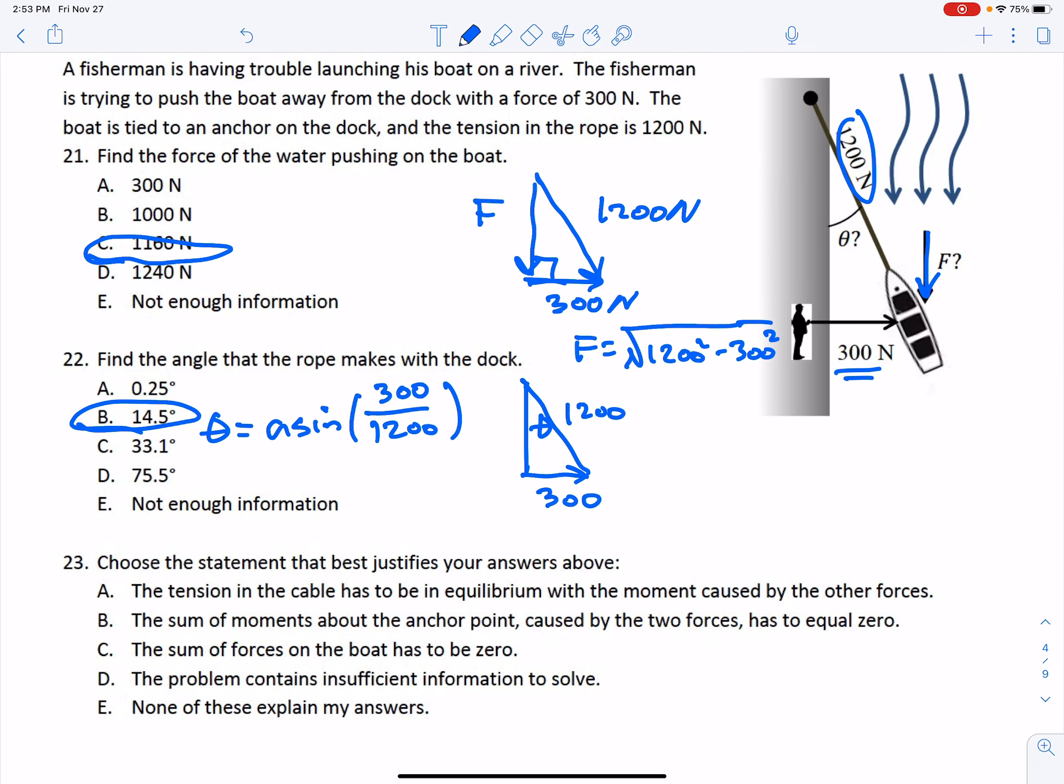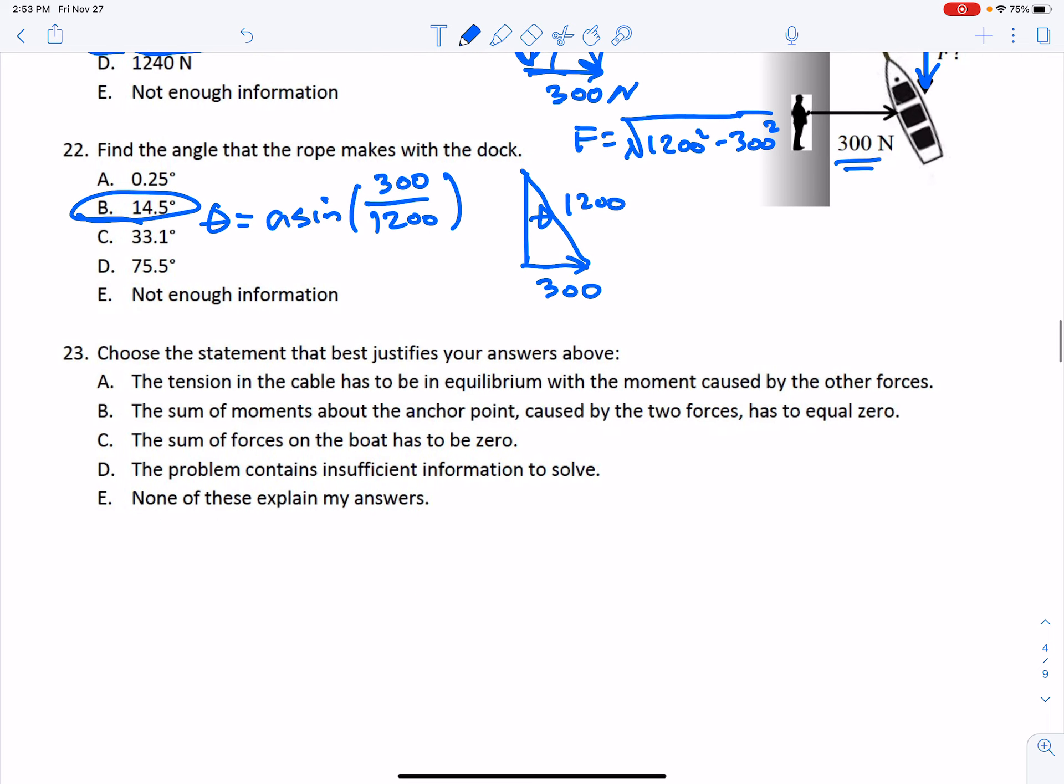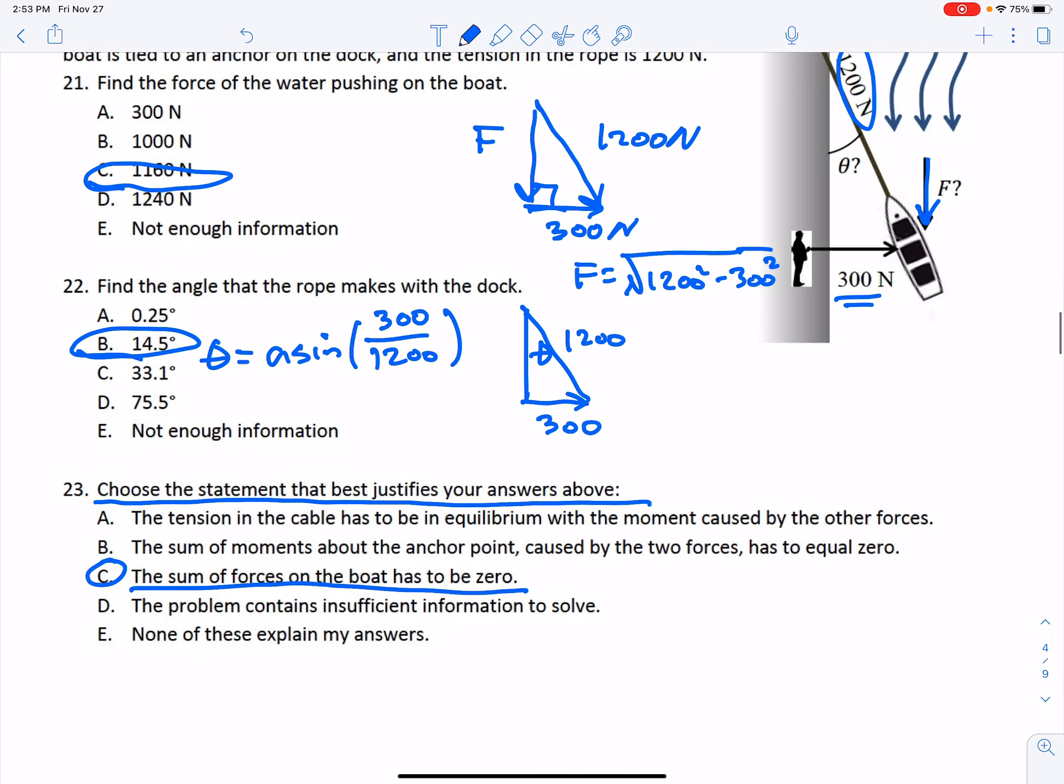So notice here we didn't calculate any moments, it's just sum of forces, it's a force triangle. If you're looking to choose the statement that best describes our answer, we're talking about only forces. Sum of forces on the boat has to be zero. That's the only thing that we needed to get to the answer on problems 21 through 23.